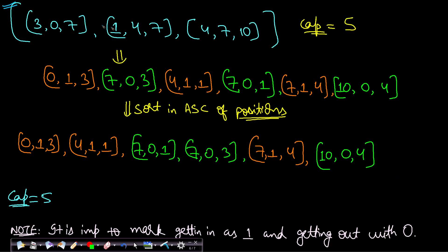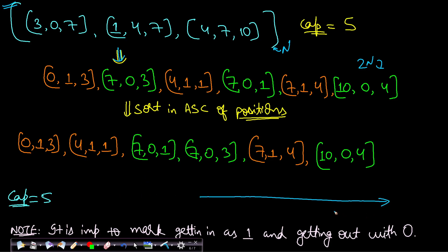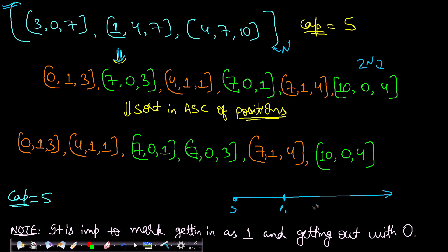After this transformation, the red regions represent passengers entering the bus and the green regions represent passengers leaving. With n trips we get 2n events in total. The bus moves from left to right in increasing order along the number line, so we need to sort all these events by location so that a point p1 occurring before p2 is processed first.